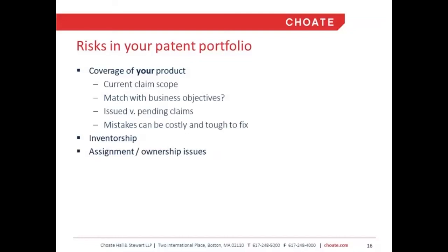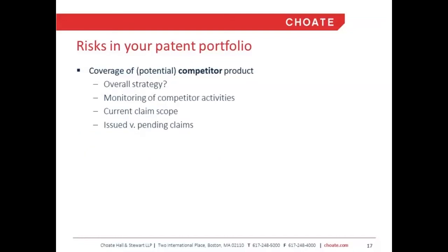We do hear of cases where a client comes to a law firm and says, 'Diligence is being done on me and there are some concerns.' All of a sudden we realize, 'You have two issued patents and one abandoned application, but none of them cover your product.' That's a real problem that may or may not be able to be fixed. It's also important to address inventorship and assignment correctly — inventorship means who made intellectual contributions to the patent, and patents can be invalidated if the wrong people are listed.